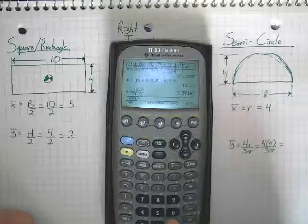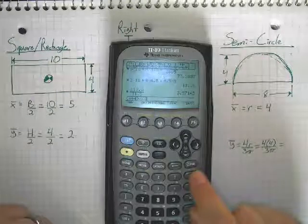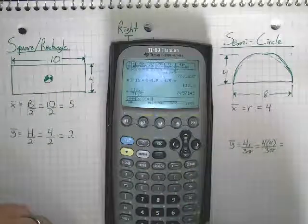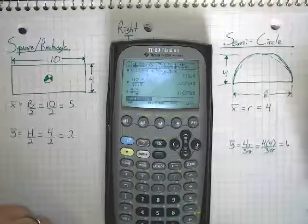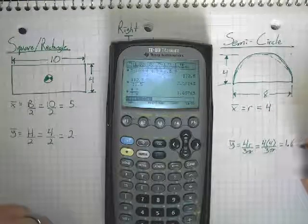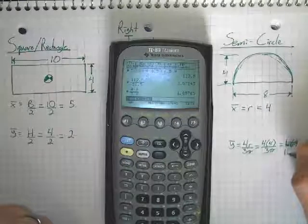divide it by parentheses again, 3 times pi. Close those parentheses and hit enter. And, I get 1.69, I guess you could say 1.70 if you want to for rounding purposes.